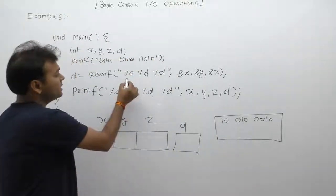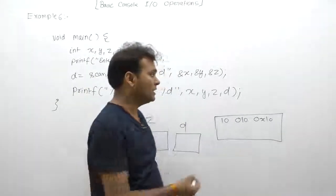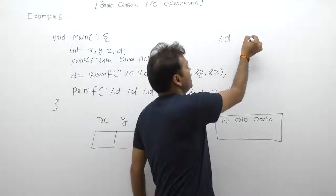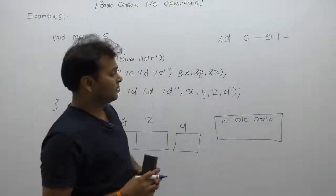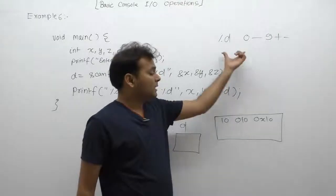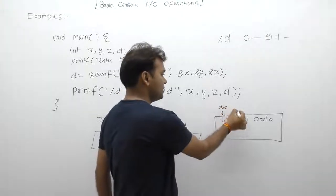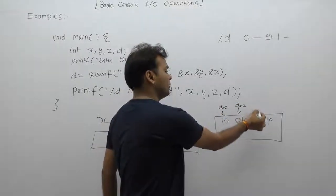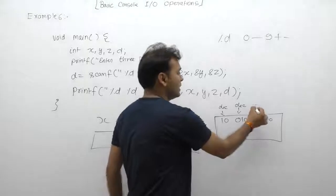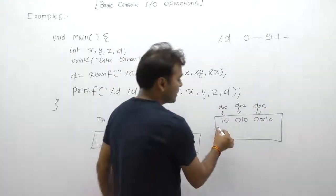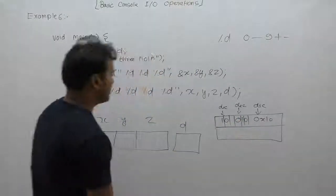But if you specify percent d (%d) format, then %d will only accept decimal number system format. The valid digits for %d are only 0 to 9 and plus and minus symbols. So in the case of %d, whatever inputs are passed at runtime in any format, all numbers will be considered as decimal inside the buffer - not as octal or hexadecimal. According to %d, the real format should have been octal and hexadecimal, but with %d they will be considered as decimal numbers.